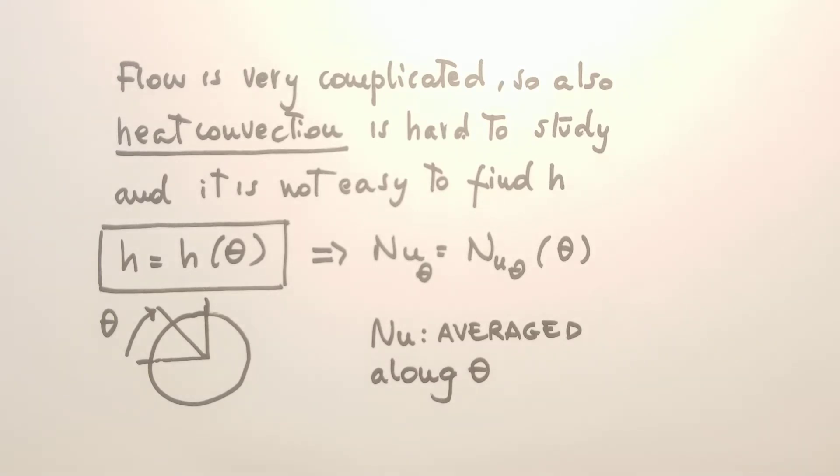In general, it depends on theta, that's the angle defined here. So also the Nusselt number is defined as a function of theta, and we indicate Nusselt number subscript theta. So now, if you want the Nusselt number in an average sense, we will have to average the local Nusselt number along theta.